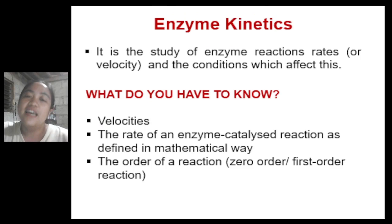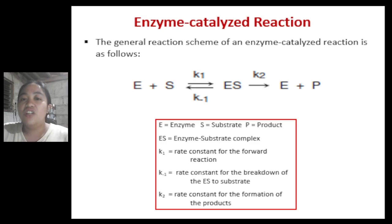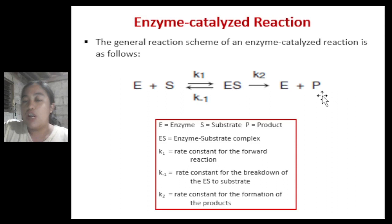Now let's go to enzyme kinetics, which is the study of enzyme reaction rates or velocity and the conditions which affect them. We need to know about velocities, the rate of enzyme-catalyzed reactions as defined mathematically, and the order of reaction such as zero order and first order. This is the general reaction scheme: E stands for enzyme, S for substrate, ES for the enzyme-substrate complex, and P for product. K values are the rate constants — K1 for the forward reaction producing the complex, K-1 for breakdown of the ES complex, and K2 for formation of products.